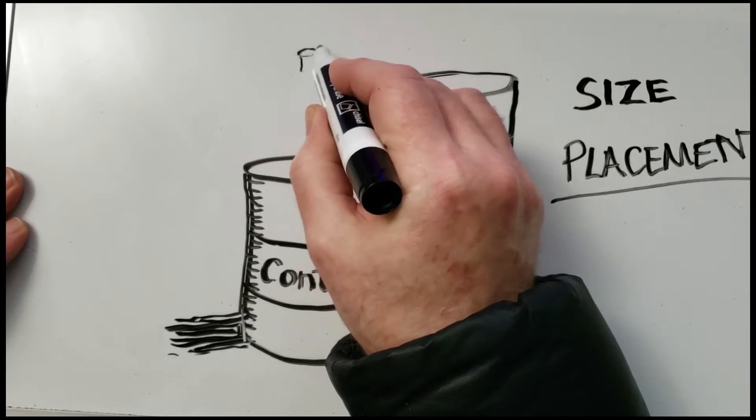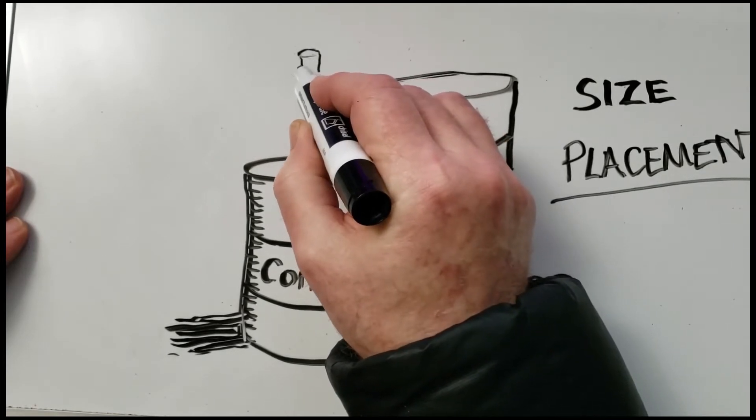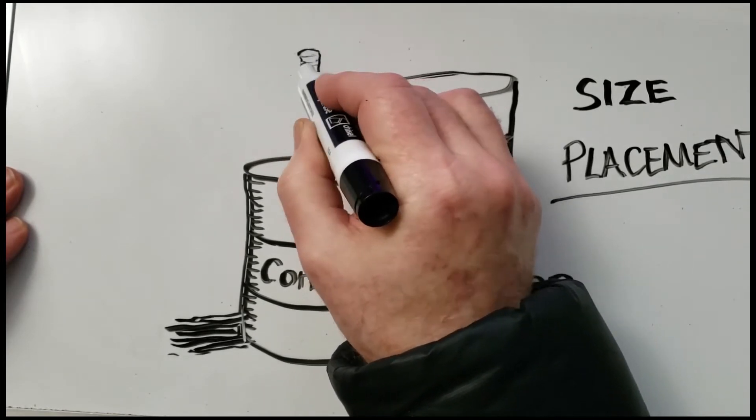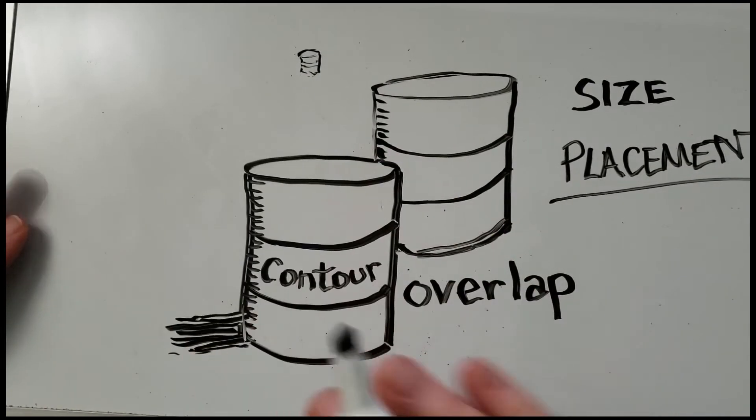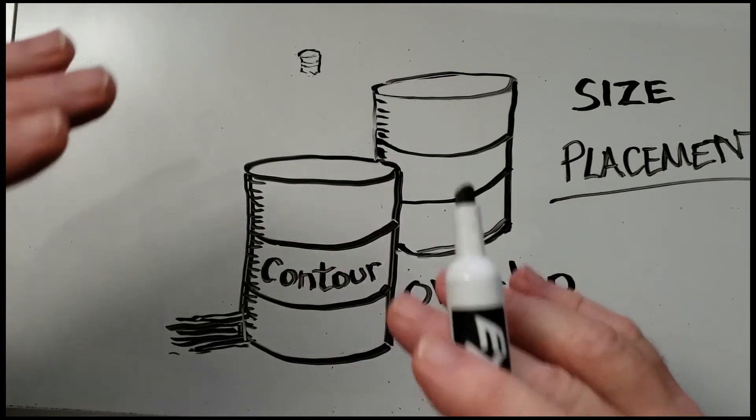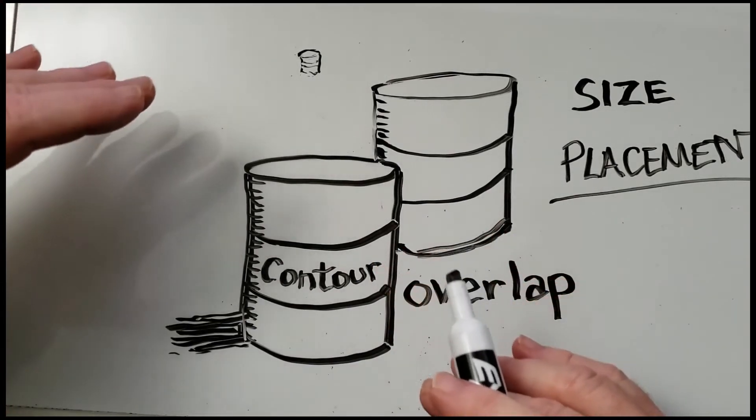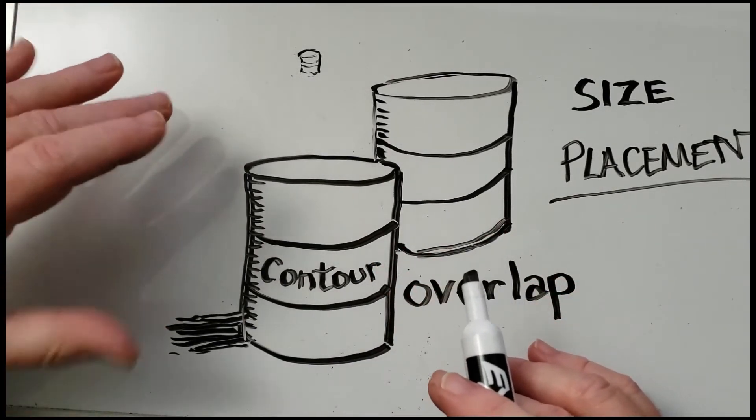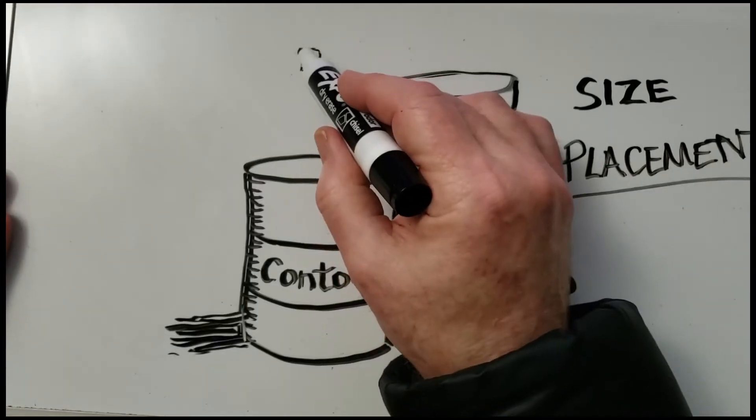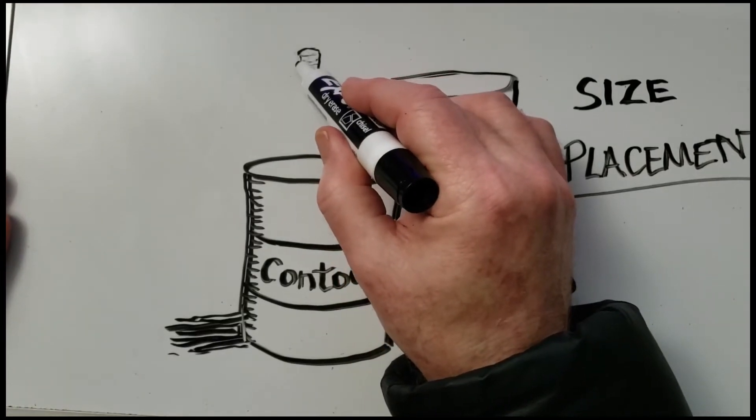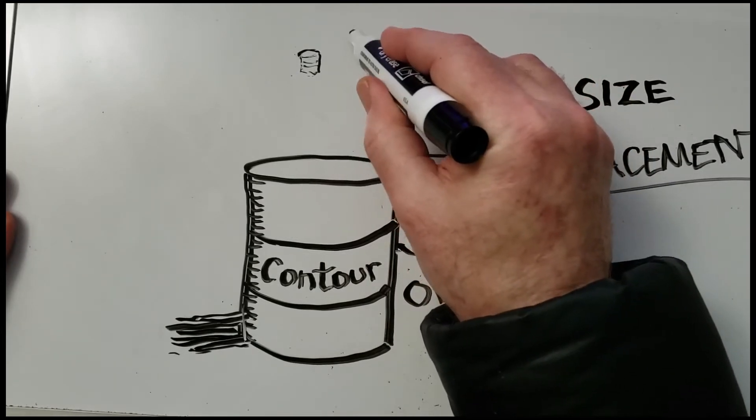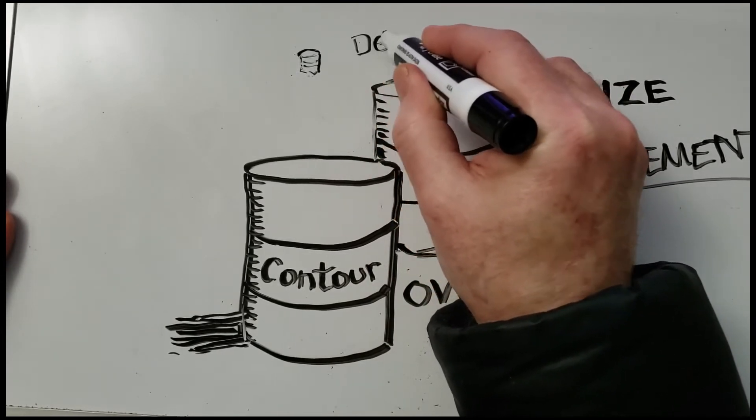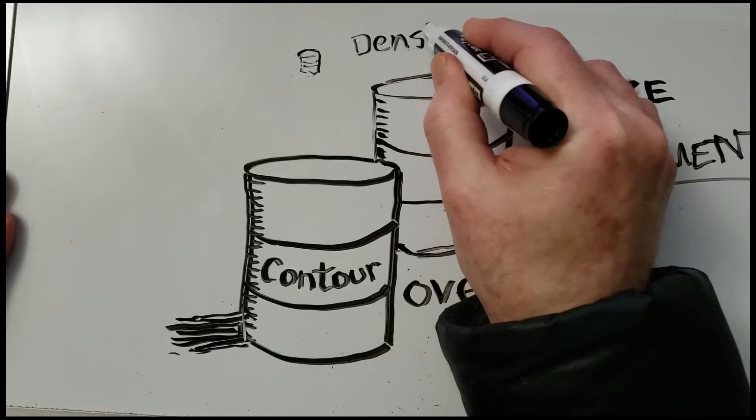Now for the next word, I've got to draw one more can right up here. Now, is that one closer or farther away? Obviously, it's much farther away. You can tell this because I've placed it higher, I made the size very small, but I've also taken out some of the detail. I've reduced its density.